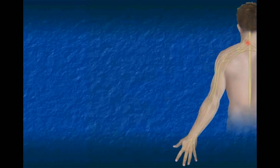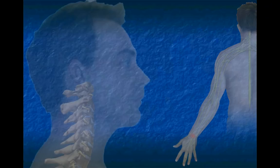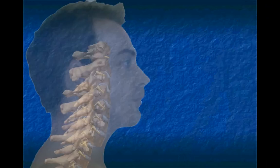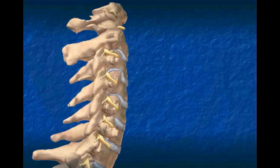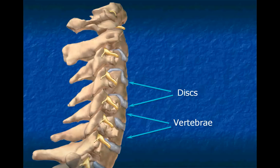Every muscle in the upper extremity is supplied by the nerve roots that travel down the arm. There are discs separating each vertebra of the spine. These discs help to separate the vertebrae to allow for movement. They also help create the space between each vertebra through which each nerve root exits the spinal column.